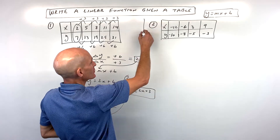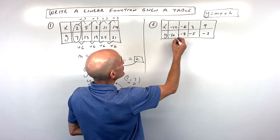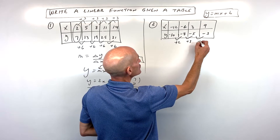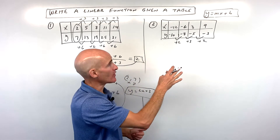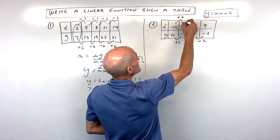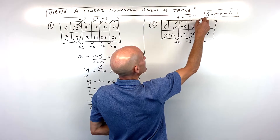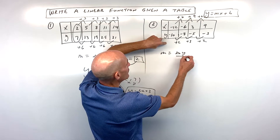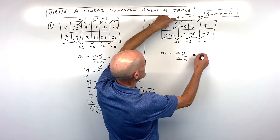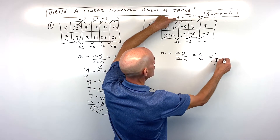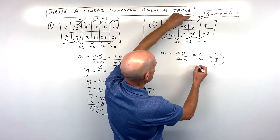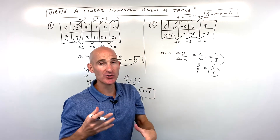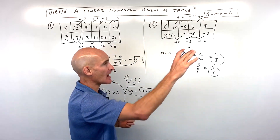Let's do example number two. This one looks like the y values are going up by two, then three, then two — and the x values are going up by six, then nine, then six. But remember, the key is the slope is the change in y over the change in x. So we have two over six, which equals one third. Three over nine also reduces to one third. And two over six is also one third. So you can see it's consistent — it has that same constant rate of change.